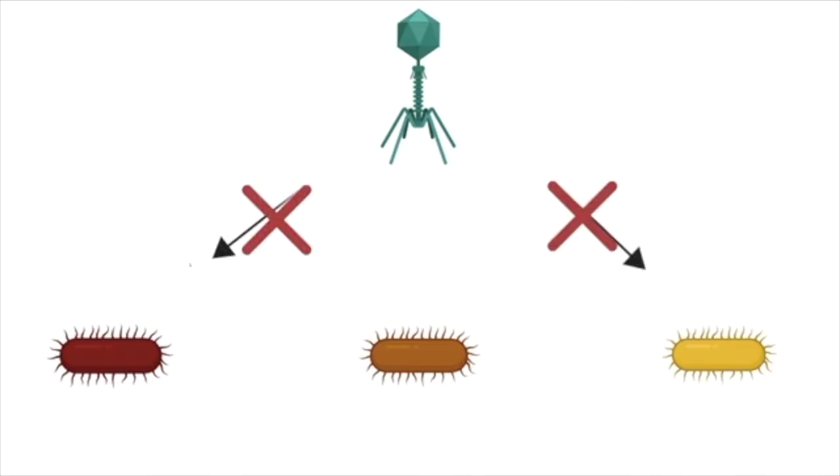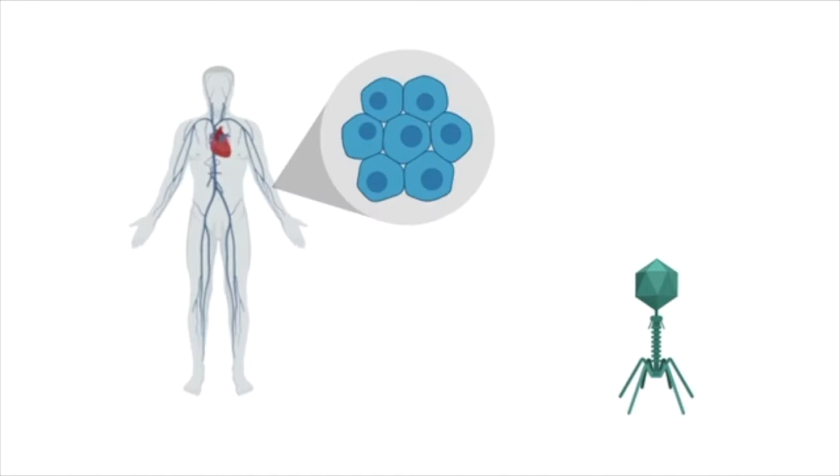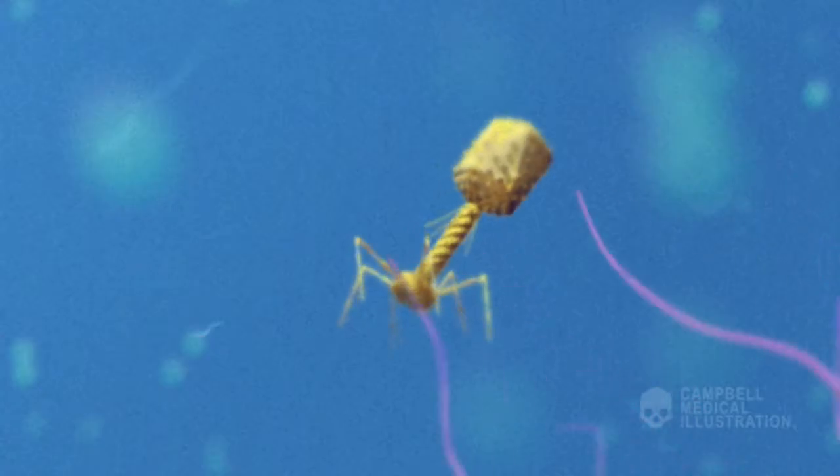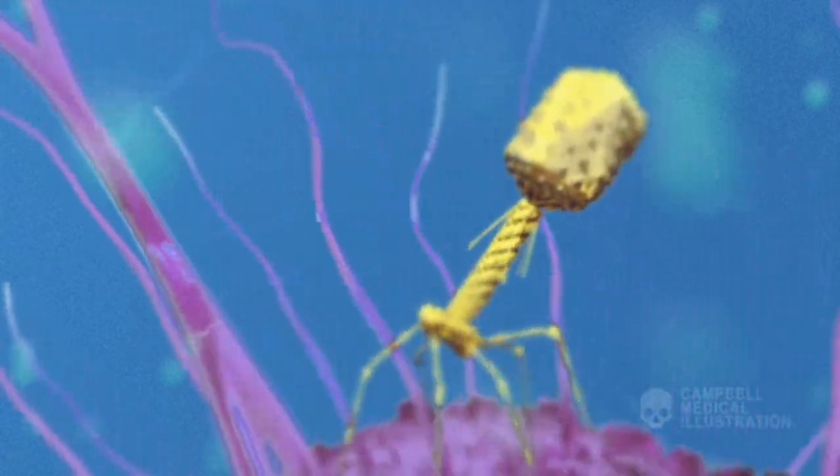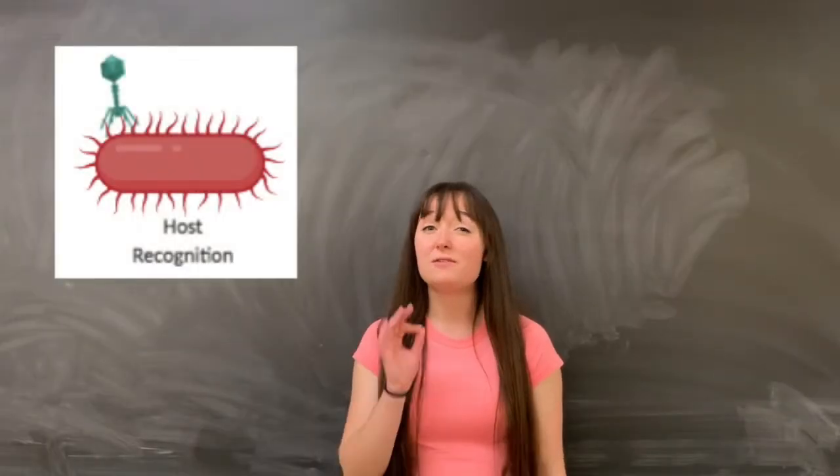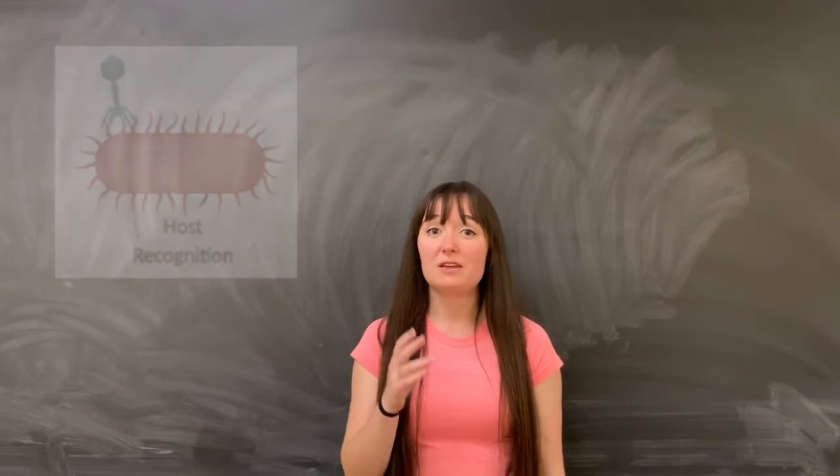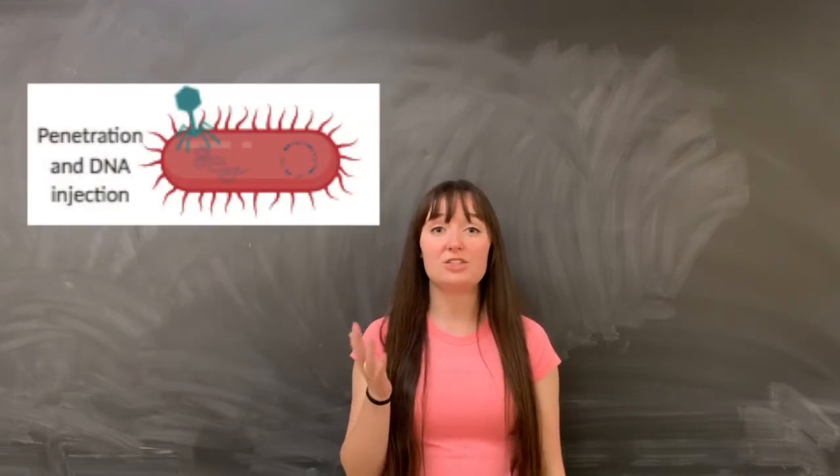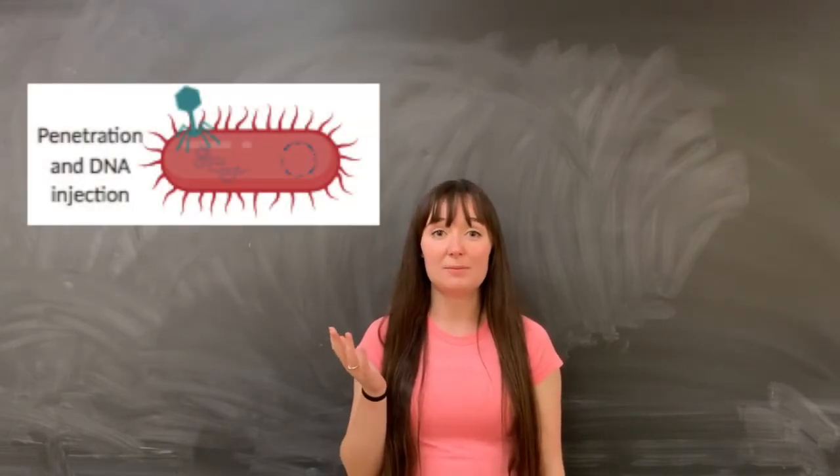Phages only target very specific bacterial cells, and not human cells at all. How do they do this, you may ask? They drift around until they bump into a bacterial cell. They then use their tail fibers to identify very specific receptors, and if they find their receptor, they're able to inject their genetic material into that bacterial cell.